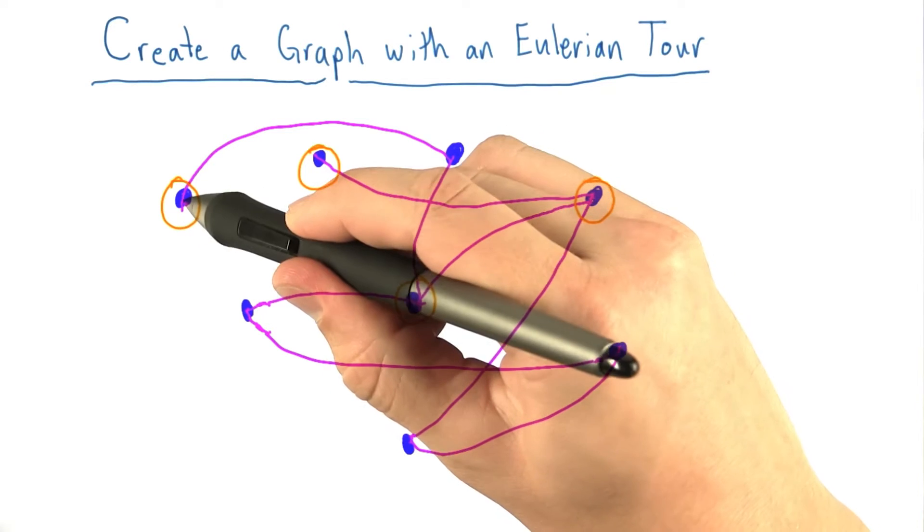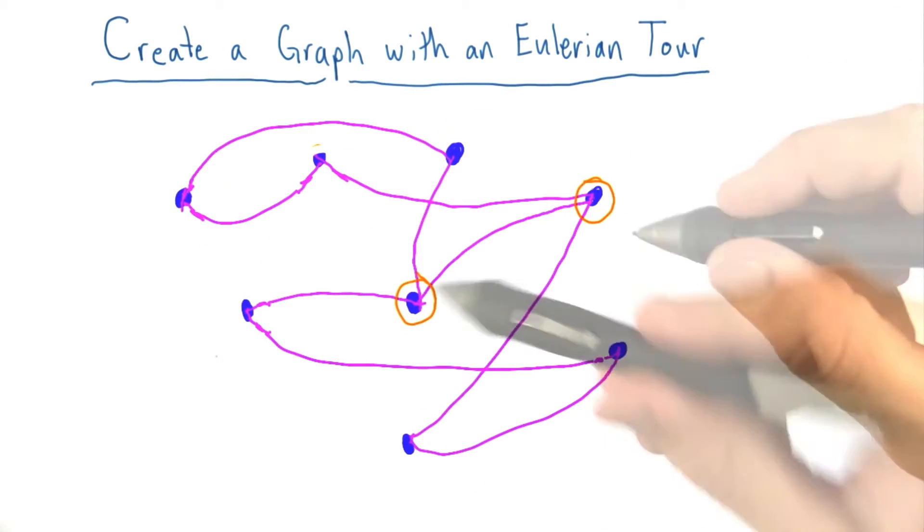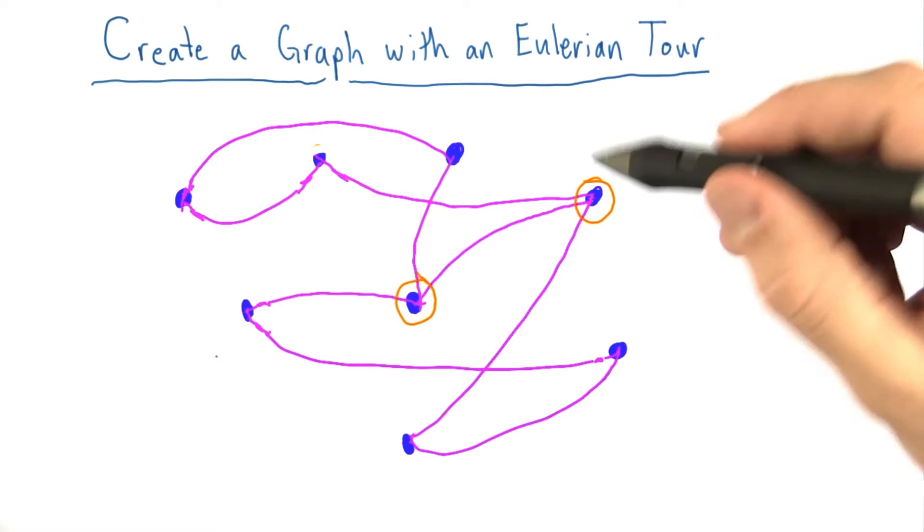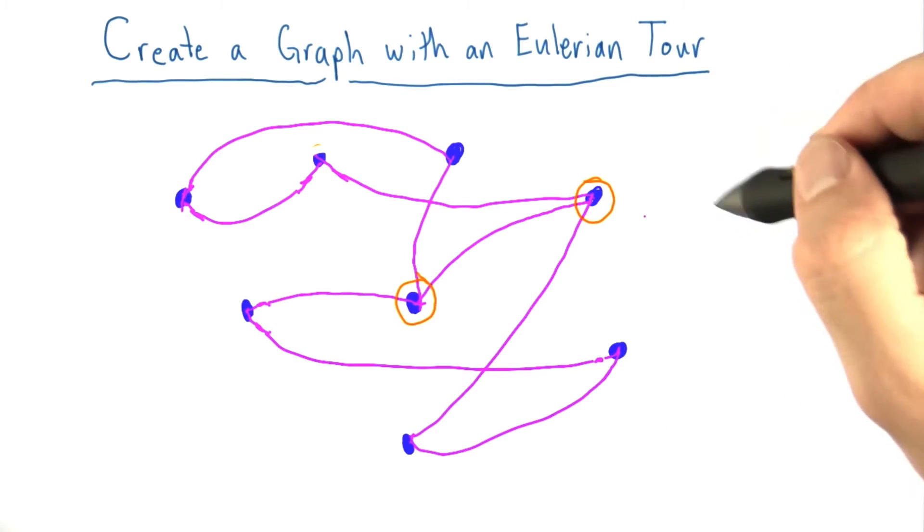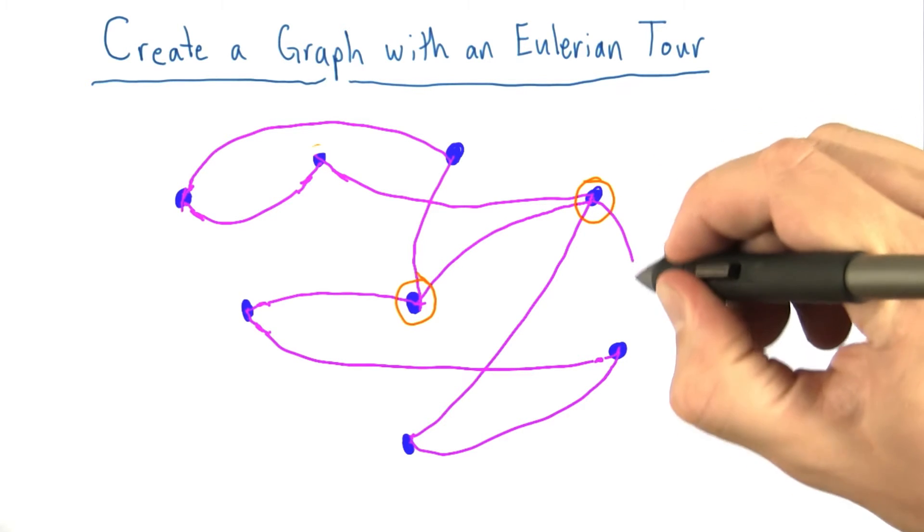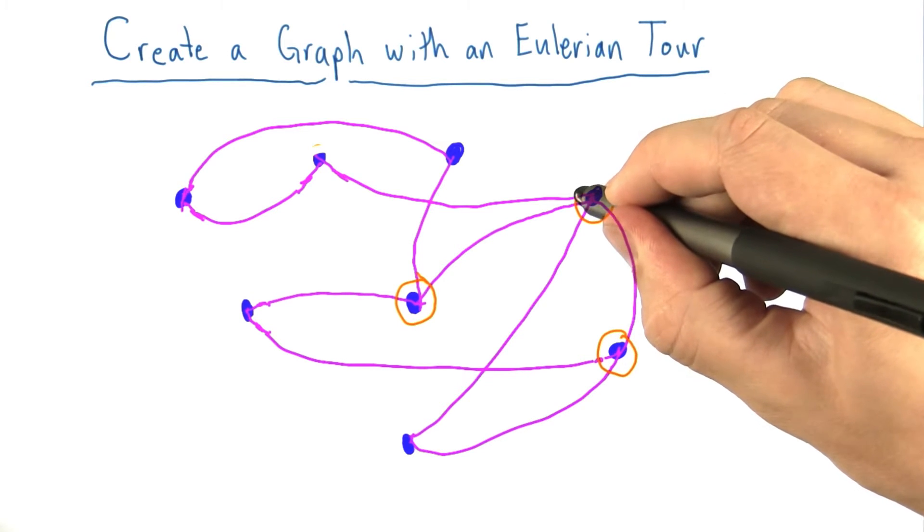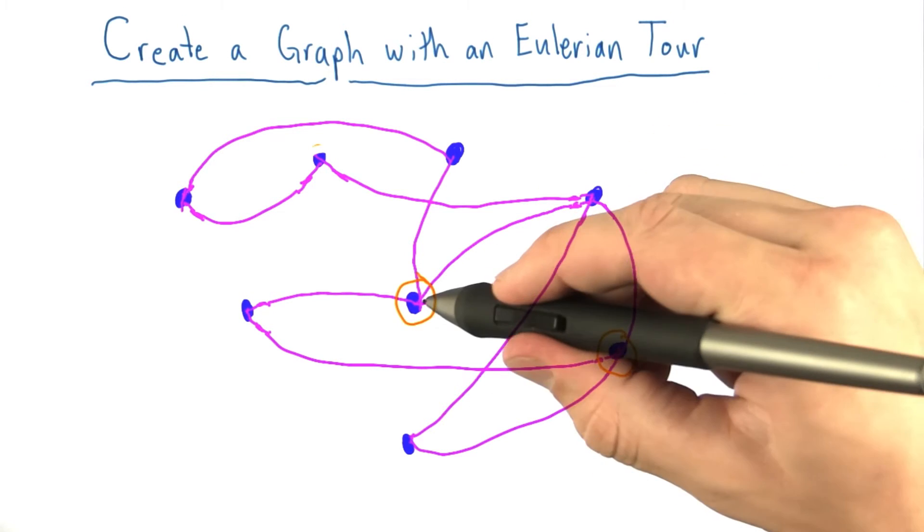We repeat this process, pick this node, connect it with that node. Now we have two nodes left that have odd degree. Unfortunately, they're already connected. What we can do is pick one of the nodes with odd degree and then randomly pick another node with even degree that it's not already connected to and connect them. So maybe this one down here. Now this new node has odd degree. The old node no longer does. Now we have two nodes with odd degree that we can connect.